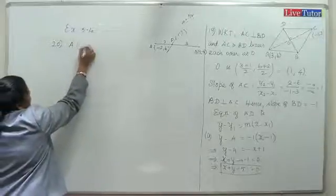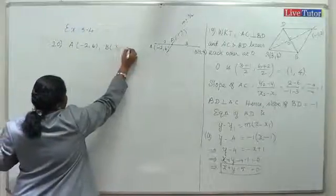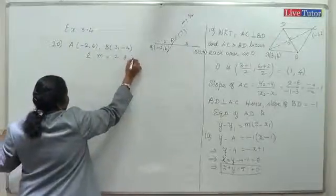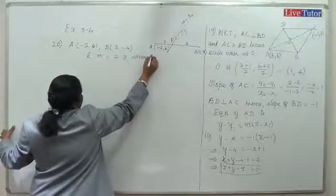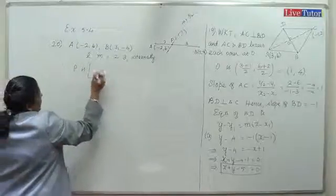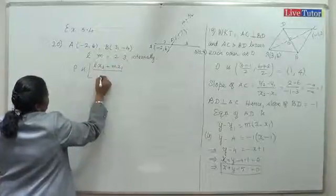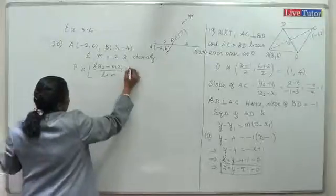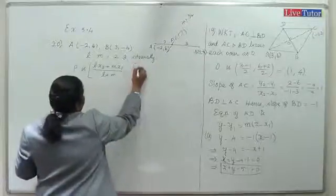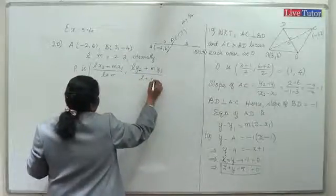A is the point (-2, 6), B is the point (3, -4), and the ratio L:M is 2:3 internally. Using the section formula: P equals (L·x2 + M·x1)/(L + M) and (L·y2 + M·y1)/(L + M).